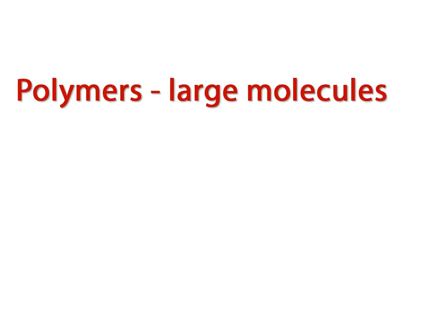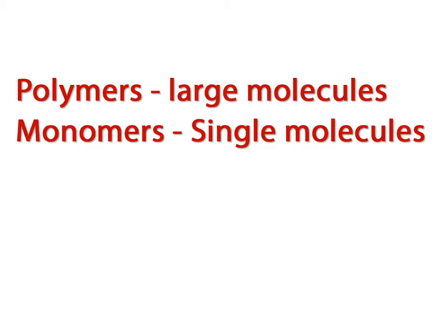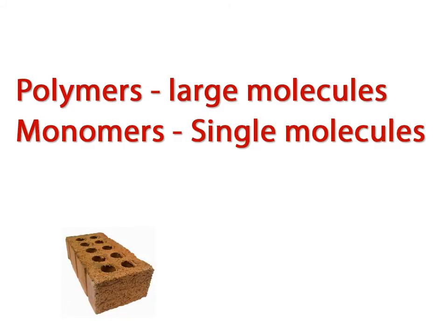This is a good time to clarify some terminology for you. If you see the term polymer, this refers to any large molecule that is made up of many components. The term monomer, on the other hand, refers to a single molecule. The monomers are the building blocks of polymers, just like bricks are the building blocks of a brick house.